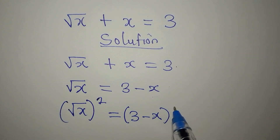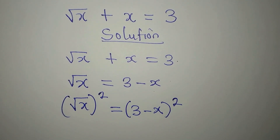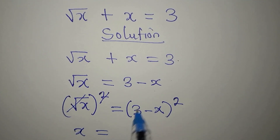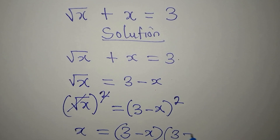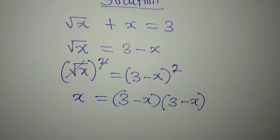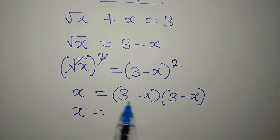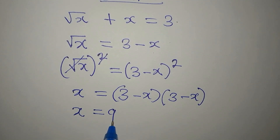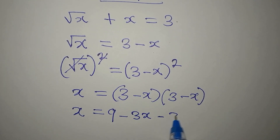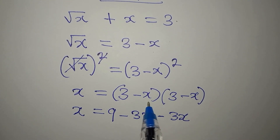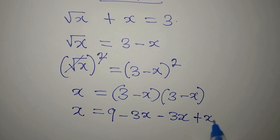Squaring both sides gives us x equals (3 minus x) squared. Whatever you do on one side you must do on the other side so the equation is unchanged. Expanding the brackets: x equals 3 times 3 which is 9, then 3 times negative x is minus 3x, and minus x times minus x gives us positive x squared.